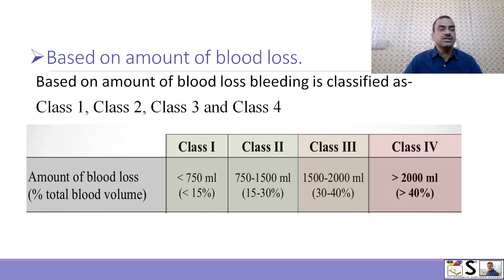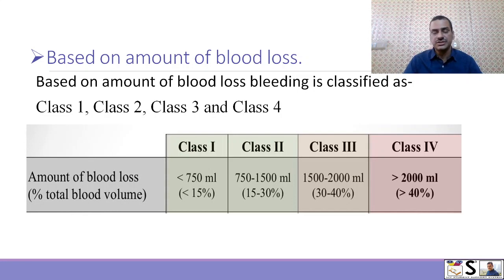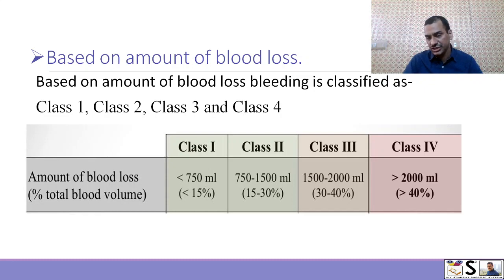The third classification is based on amount of blood loss. When blood loss is less than 750 ml, it is class 1 bleeding. If it is 750 to 1500 ml, it is class 2 hemorrhage. When it is 1500 to 2000 ml, it is class 3 hemorrhage, and when it is more than 2 liters, it is class 4 hemorrhage.